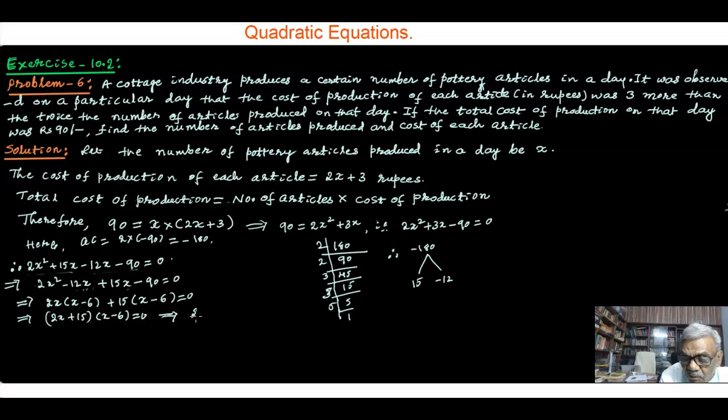That is 2x plus 15 equal to 0 or x minus 6 equal to 0. Solving these two linear equations we will get x is equal to minus 15 by 2 or x is equal to 6. Now here x which you have assumed that the number of pottery articles is x. That number is positive only because they have produced each day. And this value of x should be ignored.